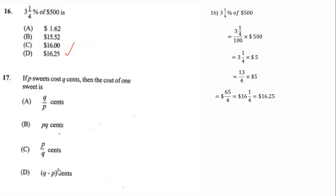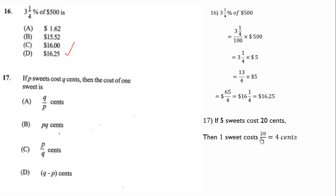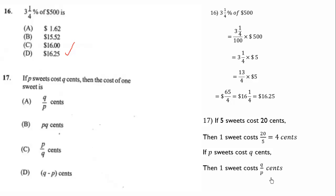If p sweets cost q cents, then the cost of one sweet is — let's take an example: if 5 sweets cost 20 cents, then one sweet costs 20 divided by 5 which is 4 cents. Therefore if p sweets cost q cents, then one sweet costs q over p cents. The correct answer is the first one.